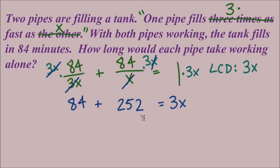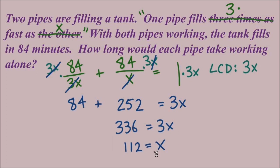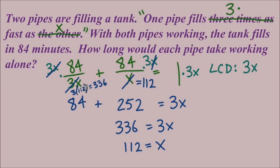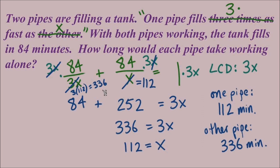We can finish solving. On the left we add the numbers: 84 plus 252 equals 336. The variable is by itself on the right. Dividing both sides by 3 gives x equals 112. Now we answer the question: how long does each pipe take working alone? One pipe is x, so 112 minutes. The other pipe is 3x — three times 112 equals 336 minutes. So one pipe fills the tank in 112 minutes working alone, and the other fills it in 336 minutes working alone.